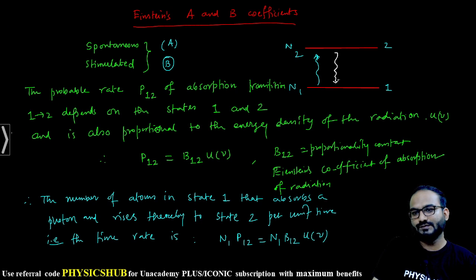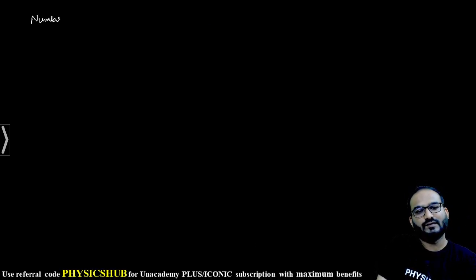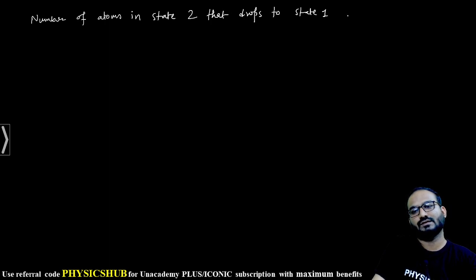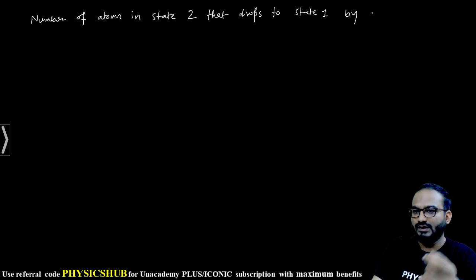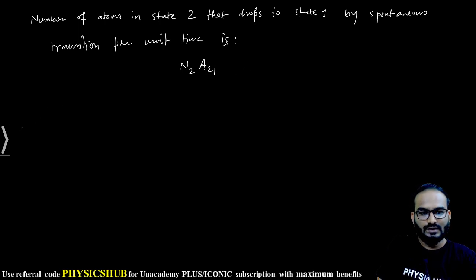Now in the spontaneous emission process, atoms will come down. The number of atoms in state 2 that drops to state 1 by spontaneous transition per unit time—for spontaneous we don't need the radiation density, so we are writing N2 A21. Here you see u(ν) is not appearing.